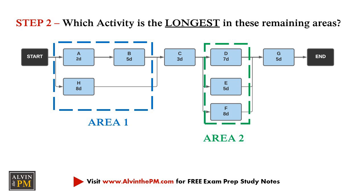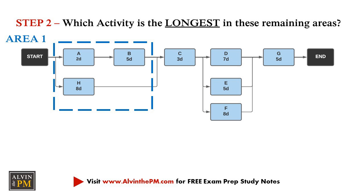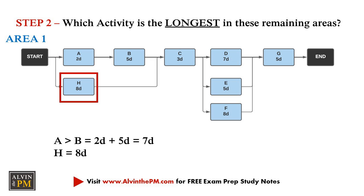The second step is to identify which activity takes the longest in the remaining areas. So for the first area, which activity sequence takes a longer amount of time? We can see that there are two paths: activity A followed by B, or only activity H. Activities A and B have a total duration of 7 days, while activity H has a duration of 8 days.